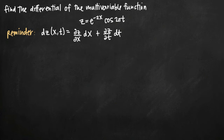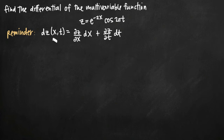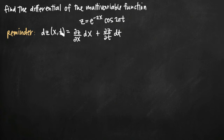Today we're going to be talking about how to find the differential of a multivariable function. In this particular problem, we've been given the function z equals e to the negative 2x times cosine of 2 pi t. Our final answer is going to be a value for dz that's in terms of x and t.